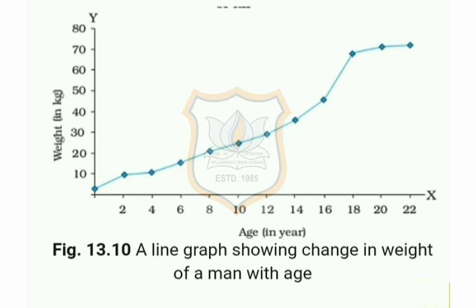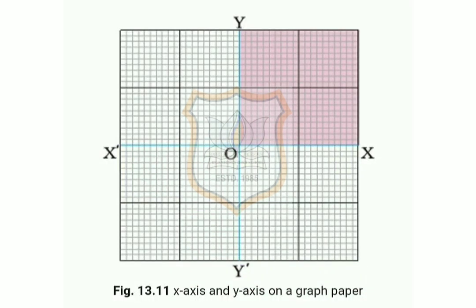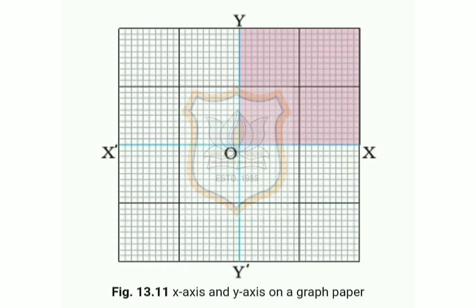Let's learn to make such a graph. Take a sheet of graph paper and draw two lines perpendicular to each other, as shown in figure 13.11. Mark the horizontal line as XOX' — this is known as the X-axis. Similarly, mark the vertical line as YOY' — it is called the Y-axis.